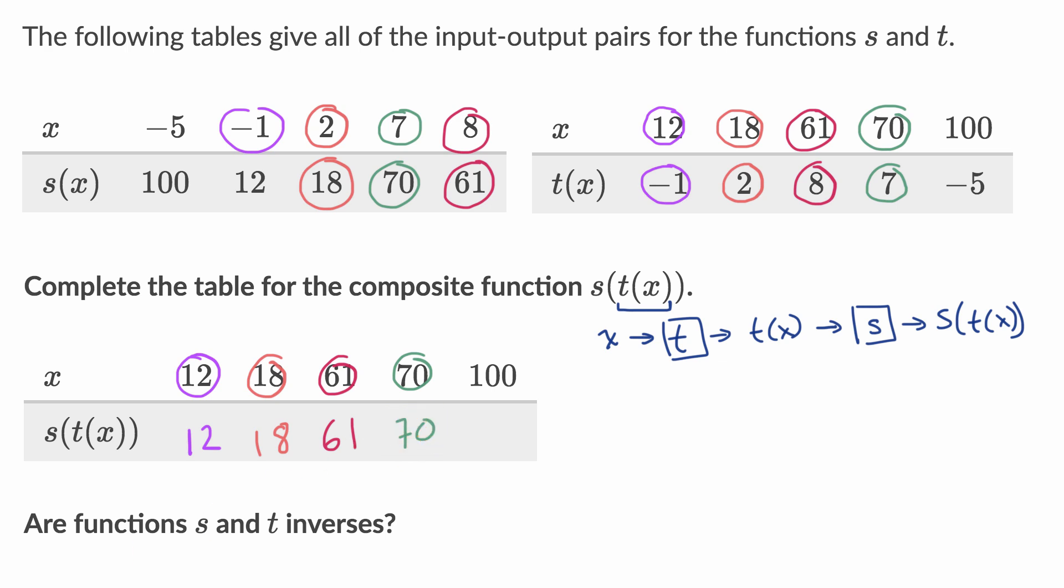And then one last one I will do in this blue color. When you take 100, input it into t, it outputs negative five. You take negative five, input it into s, you get 100.